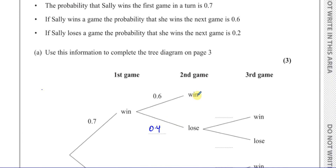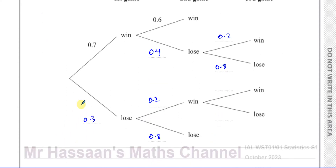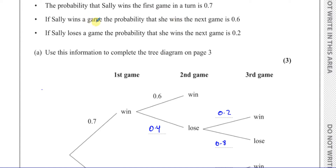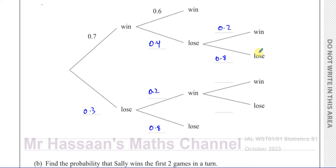If she wins then loses, the probability she wins the next game is 0.2, so that's 0.2 with 0.8 on the other branch. If she loses the first game then wins the second, the probability she wins the next is 0.6, giving 0.6 and 0.4 on those branches. If she loses two games, she can't play the third, so that branch stops after two losses.